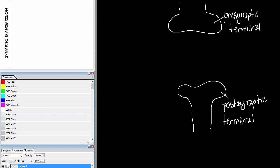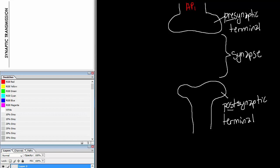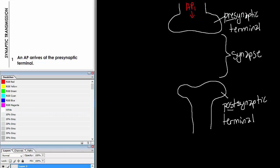They're called this because the pre-synaptic terminal comes before and the post-synaptic terminal comes after a gap called the synapse. The nerve impulse coming down the neuron at the top has to jump this very small gap called the synapse and land on the post-synaptic terminal. Step one: an action potential arrives at the pre-synaptic terminal.